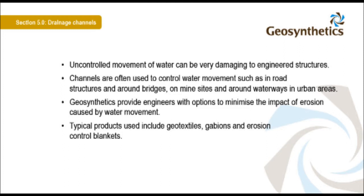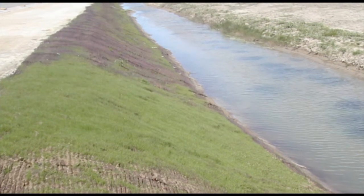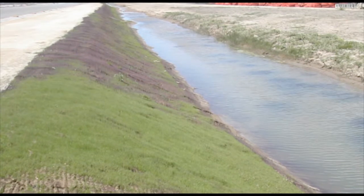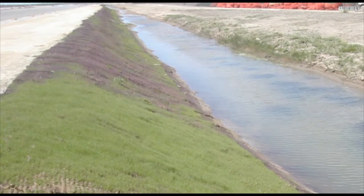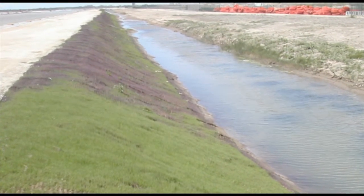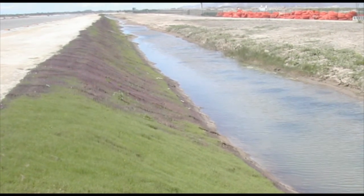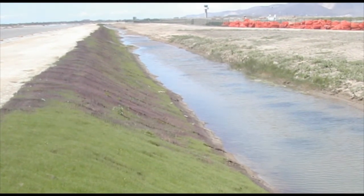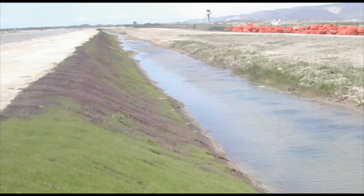Typical products used include geotextiles, gabions and erosion control blankets. Drainage channels can vary in size and flow capacity, but they must all be designed for peak flow events, such as a 1 in 50 year storm event. The rate of flow and expected volume will generally dictate the geosynthetic materials used.